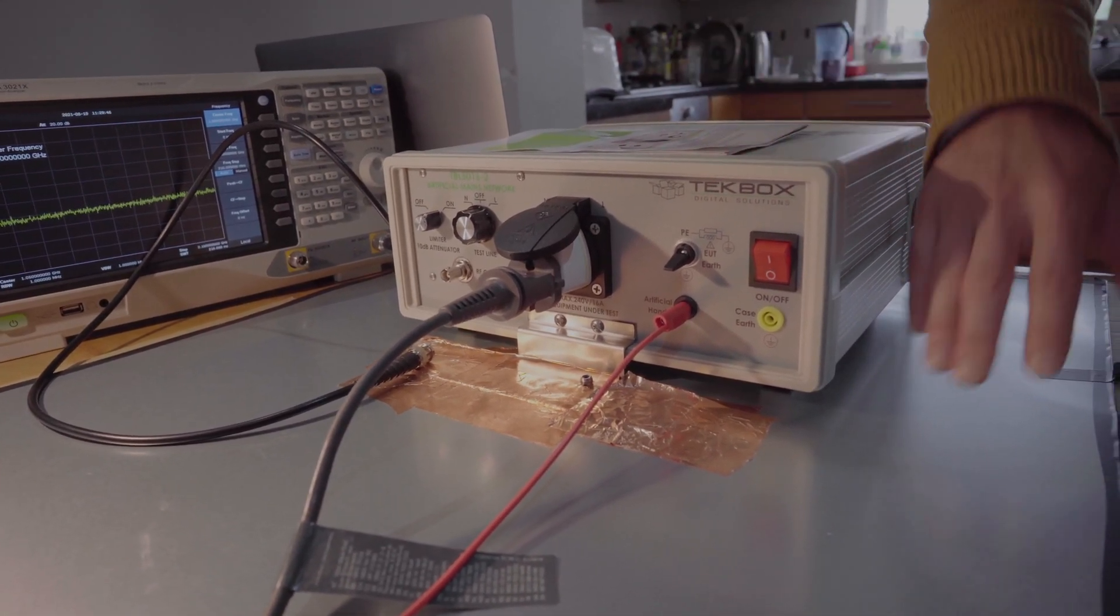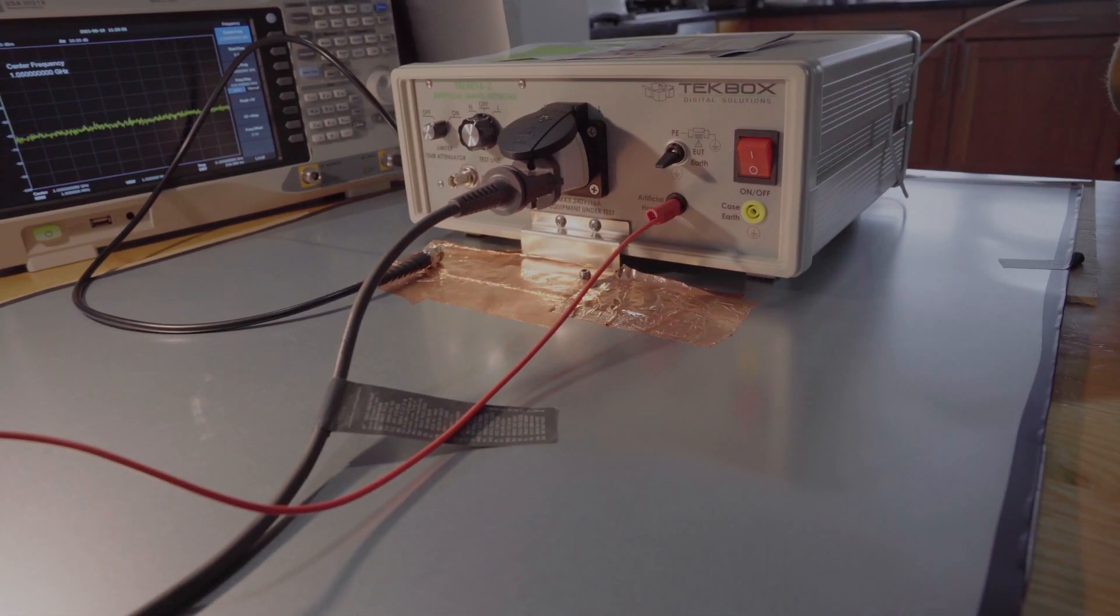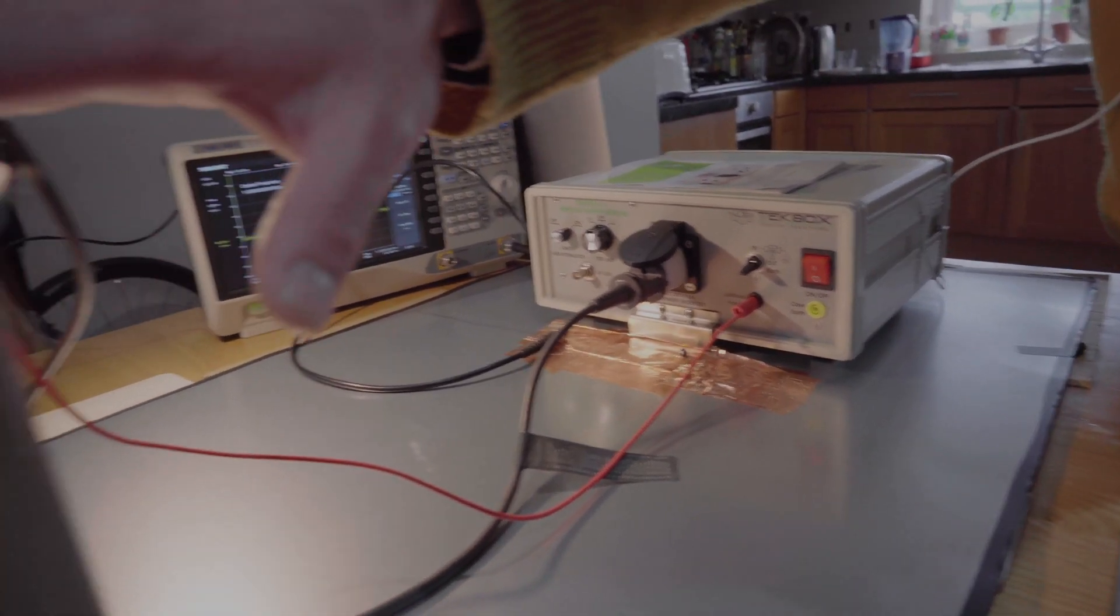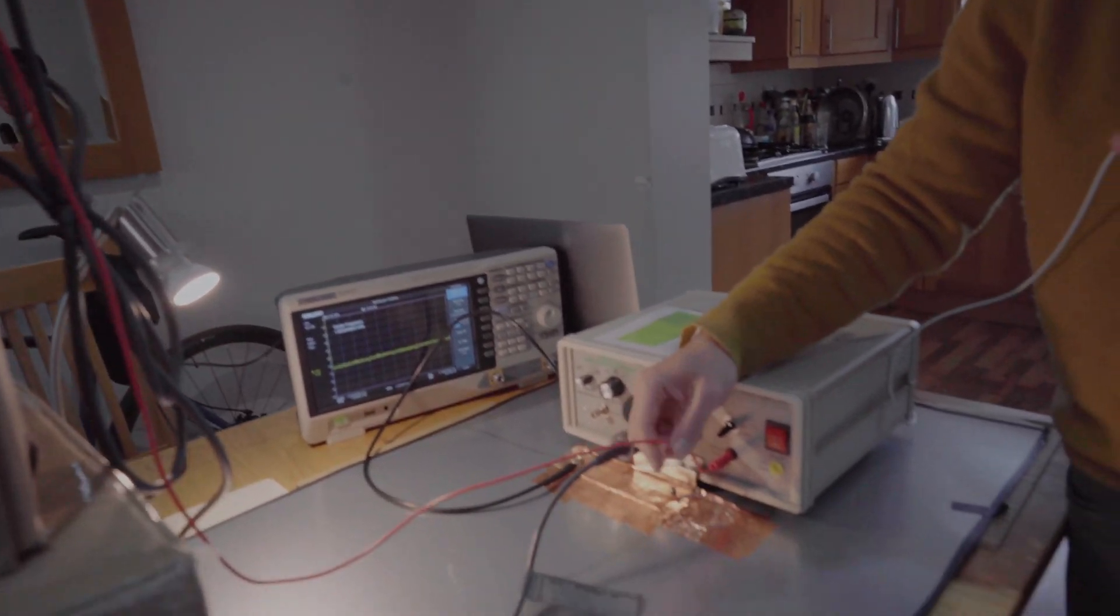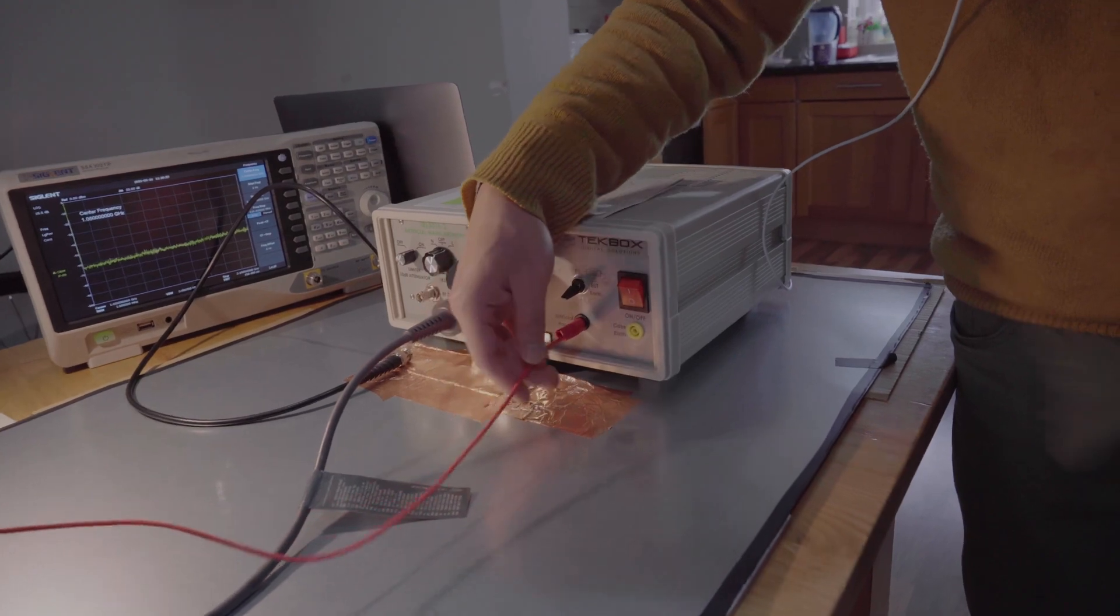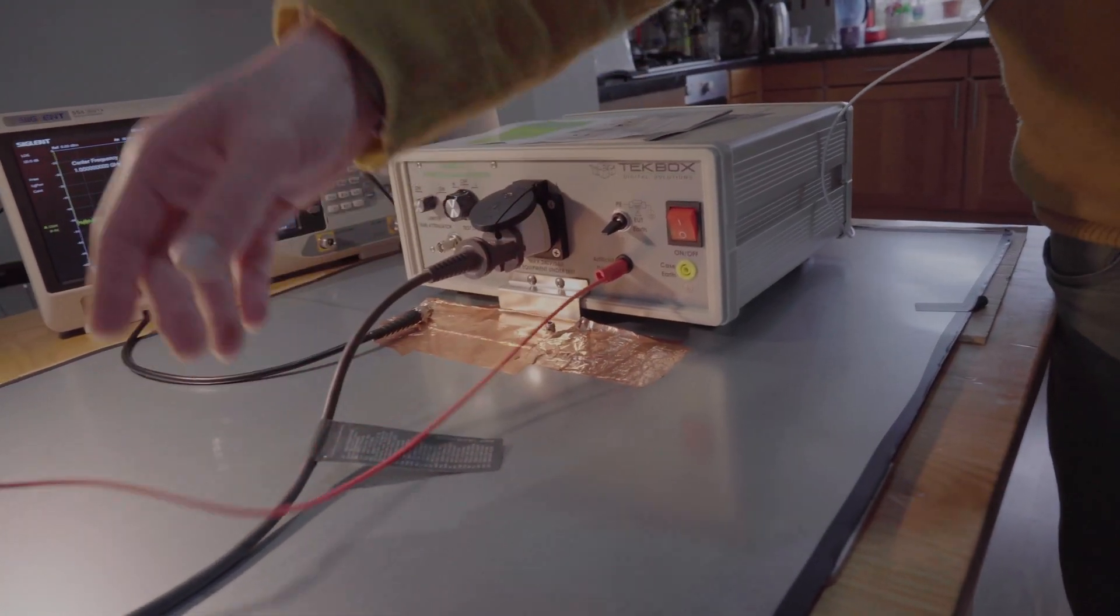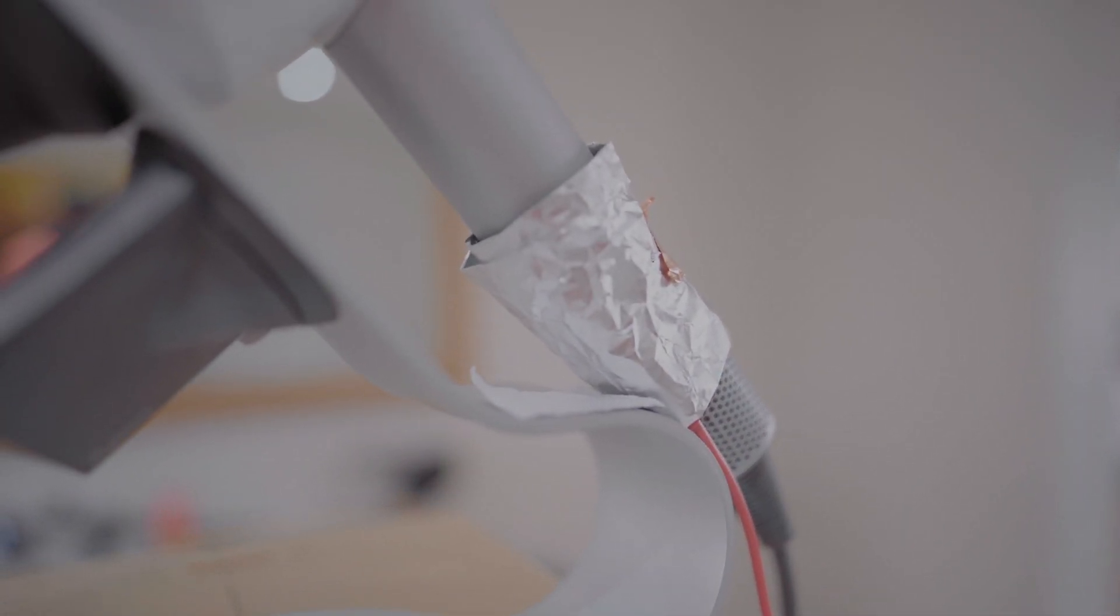As you can see, the test setup shows a LISUN ground plane and we have some insulation material to support the DUT. And because the DUT is a handheld product according to the standards, you will also need to have an artificial hand. We made some foil wrapped around to represent a hand holding the product.